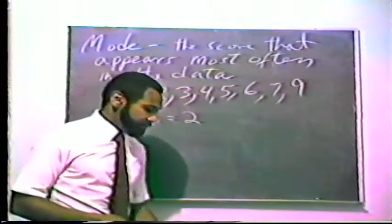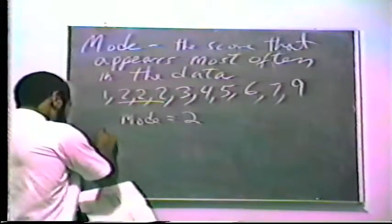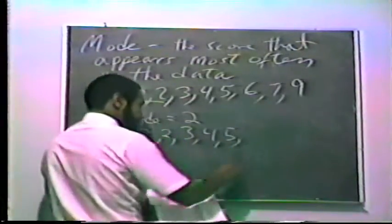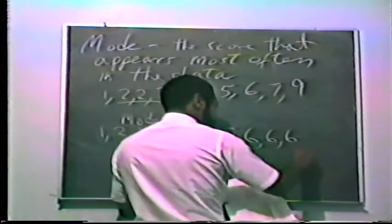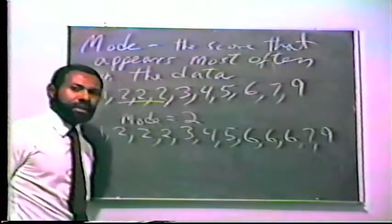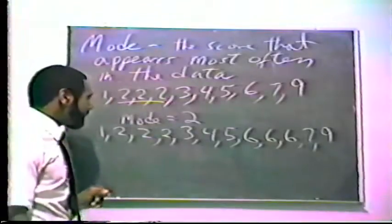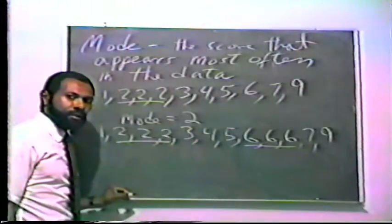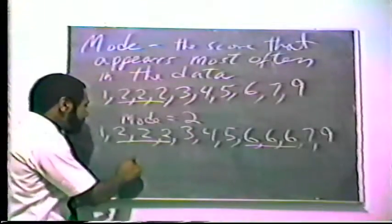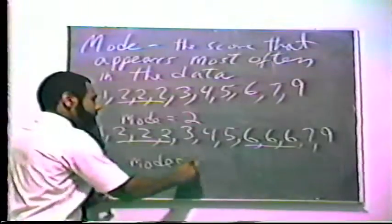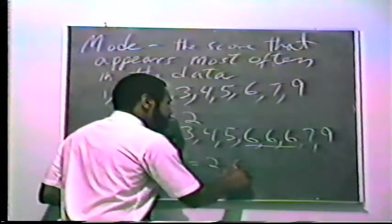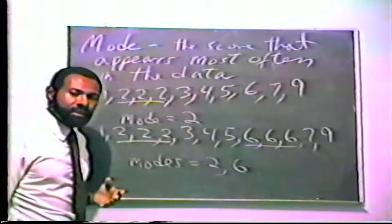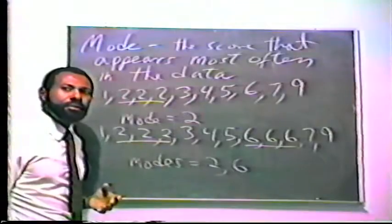Let's look at another example of the mode. Let's say we have this data set. We see that we have three 2's and we also have three 6's. In this case, we have two modes. 2 is a mode and also 6 is a mode. So you can see one of the problems with using the mode as a measure of central tendency — you can actually end up with two different modes.